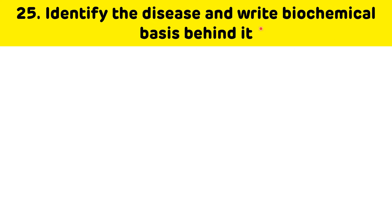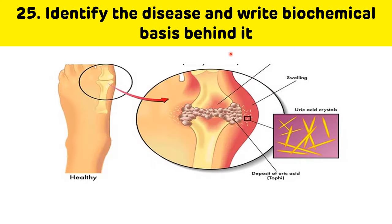Identify the disease and write the biochemical basis behind it. This is a case where uric acid crystals are deposited in the synovial fluids of joints, which leads to gout. It occurs due to increased uric acid levels in the blood. These are the uric acid crystals — this is the case of gout.